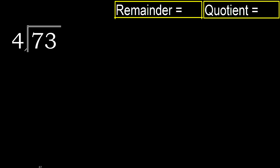73 divided by 4. 7 is not less, therefore start with 7. 4 multiplied by which number is nearest to 7 but not greater? 4 multiplied by 2 is 8 — 8 is greater. 4 multiplied by 1 is 4. 7 minus 4 is 3.